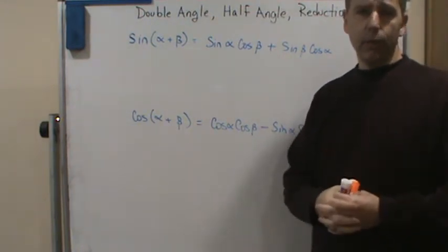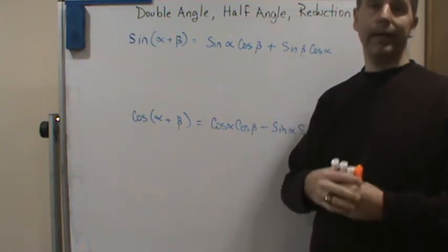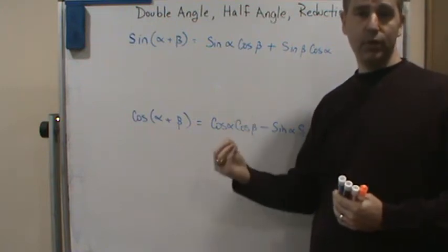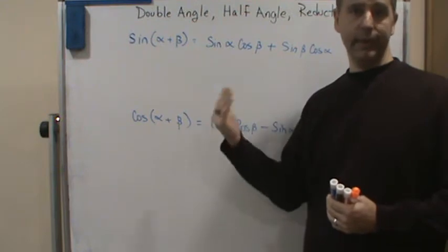So let's start with the double angle. So how does the double angle formulas get derived? By simply taking the sum and difference formulas and using the case that the angles are the same. So alpha is equal to beta.